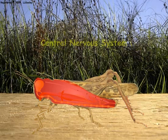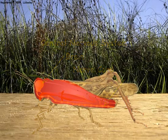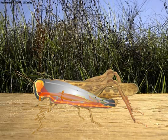The insect nervous system consists of a brain located in the head and a nerve cord located on the lower ventral side of the body. Insecticide is absorbed by the insect nervous system to produce its toxic effects.